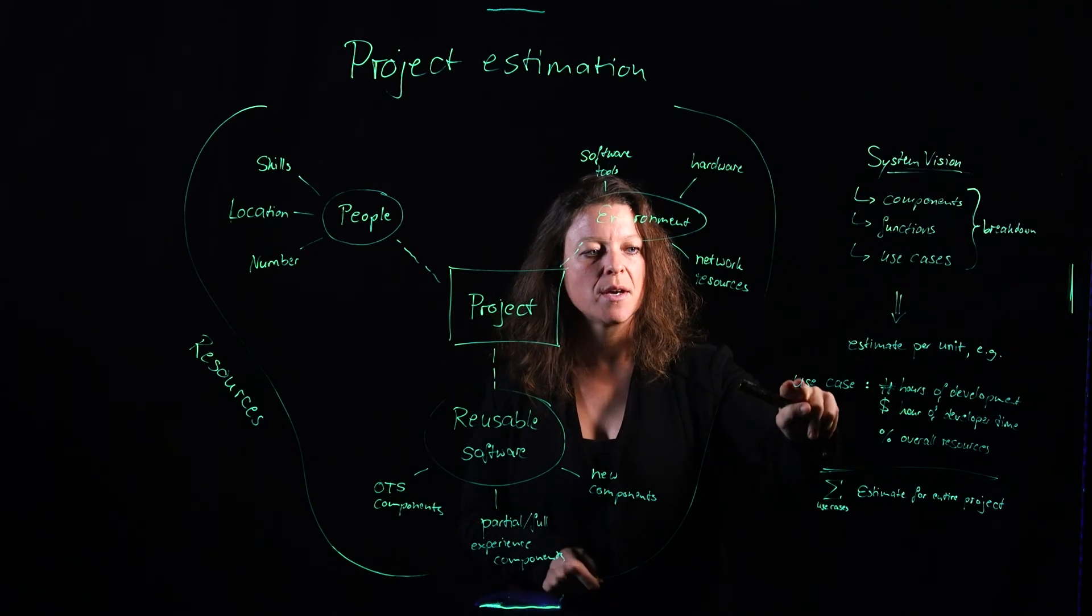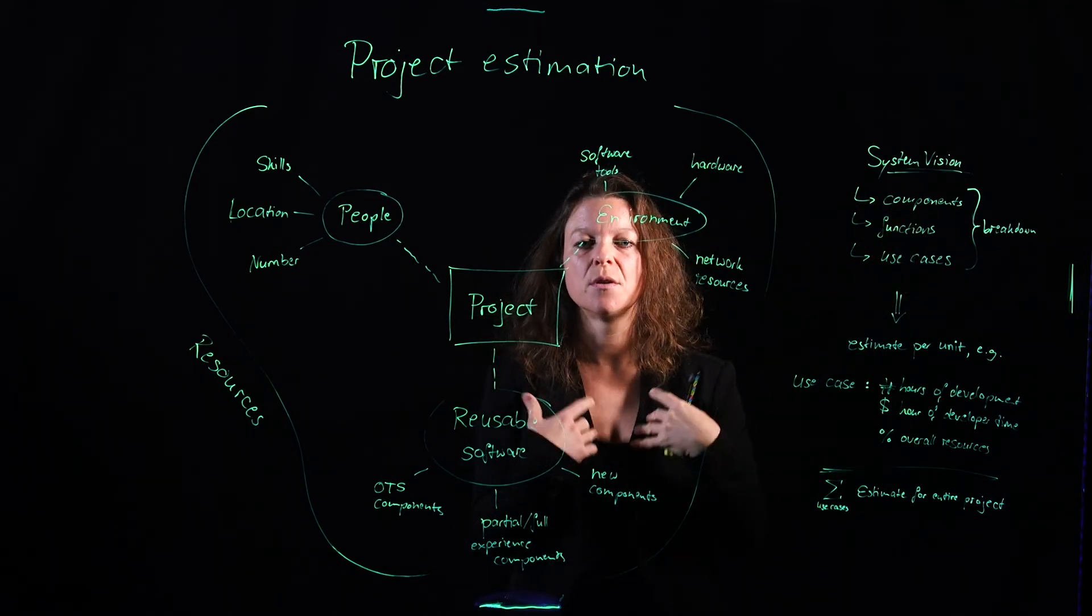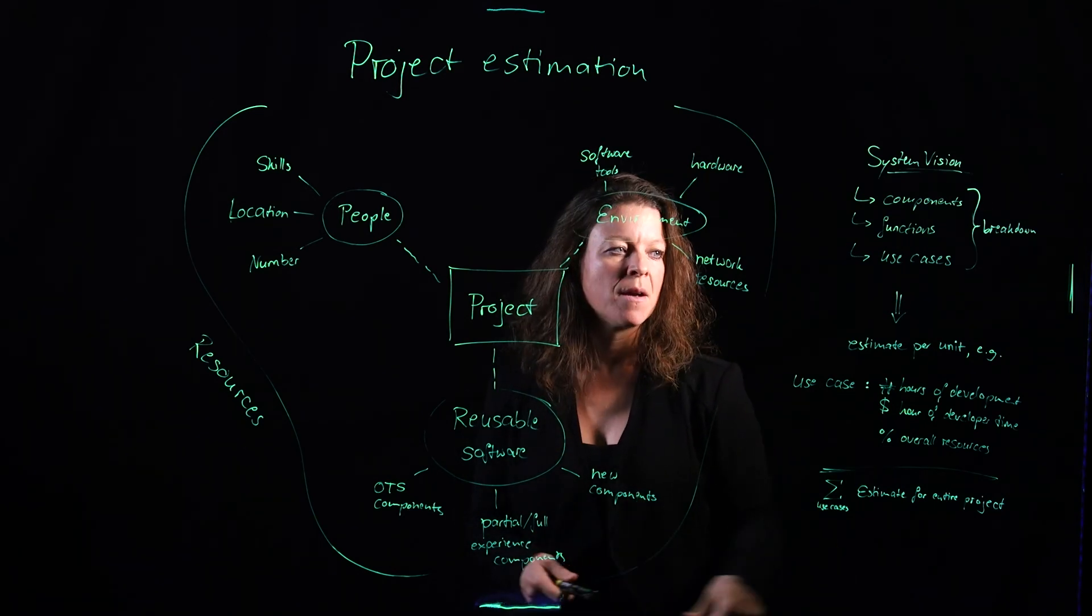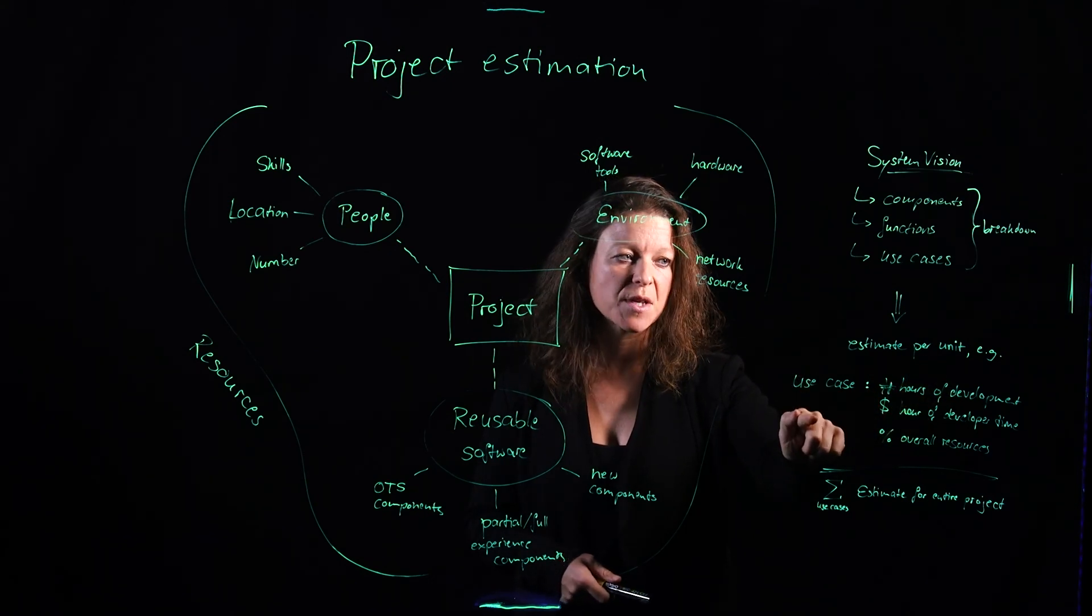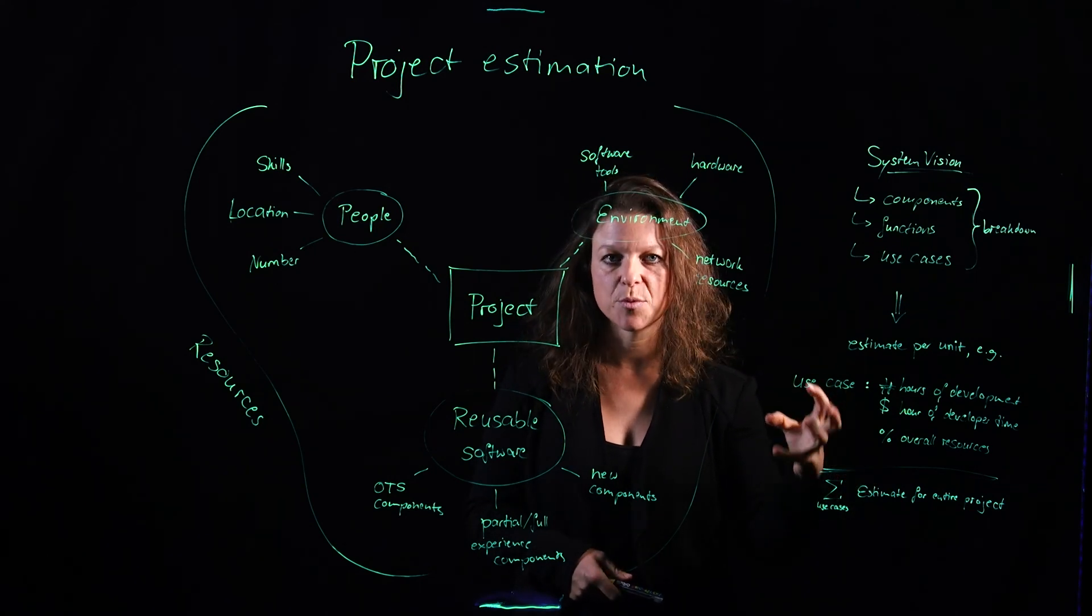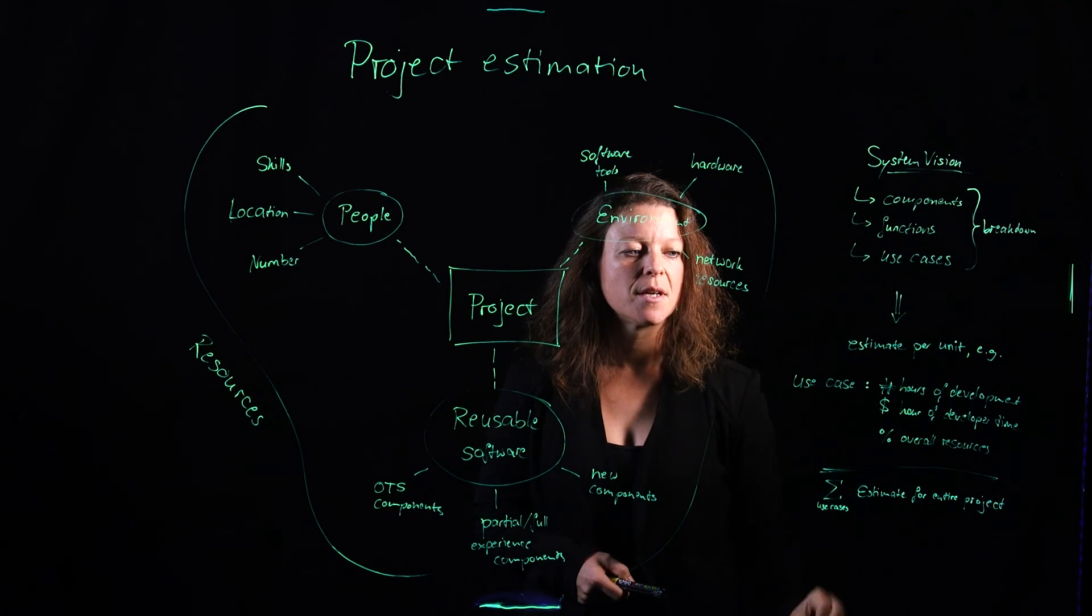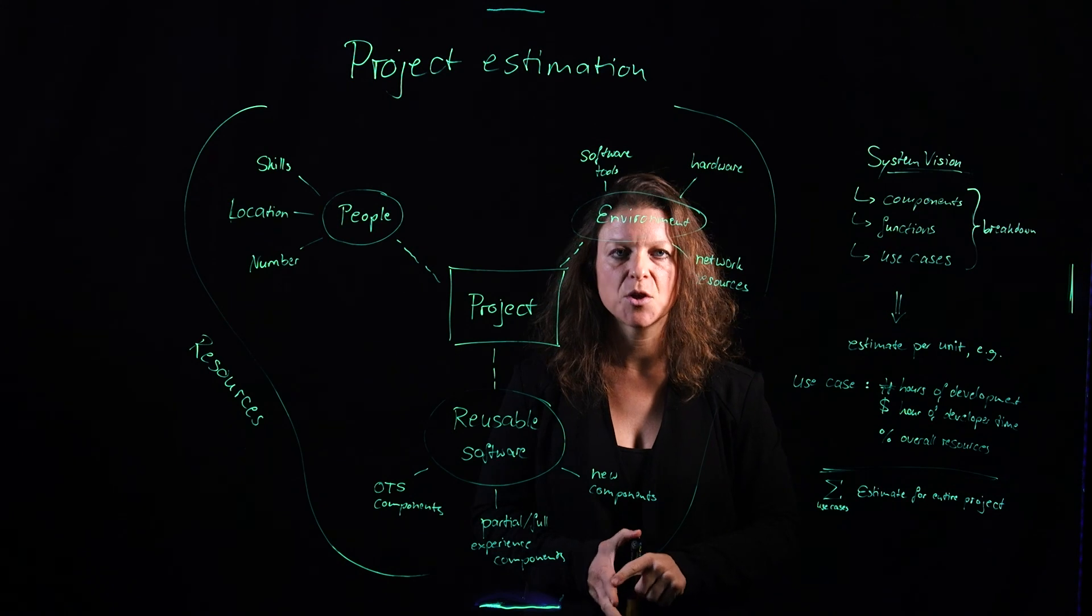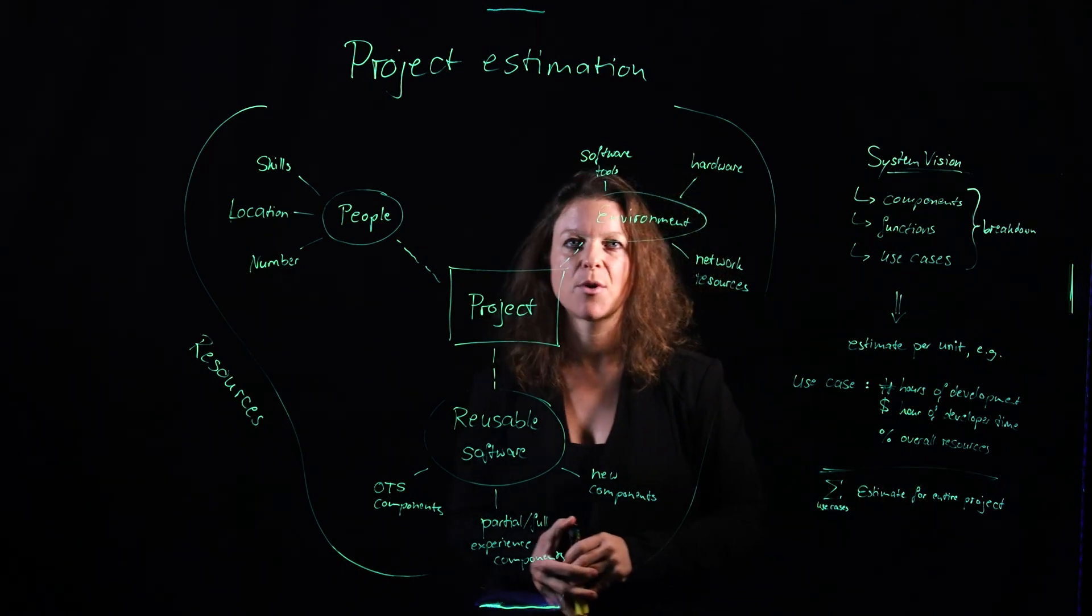We take the system vision and then we choose one method of breakdown that we are most experienced with or that lends itself best to the type of system we're developing. And then we estimate per unit, how many hours is that specific use case going to be? How much is that developer costing us that we need with the expertise for implementing that type of functionality and then a percentage of the overall resources? And by accumulating that over all use cases, we get to an estimate for the entire project.